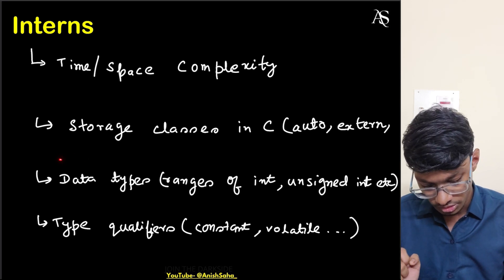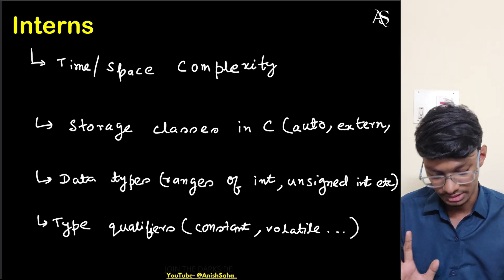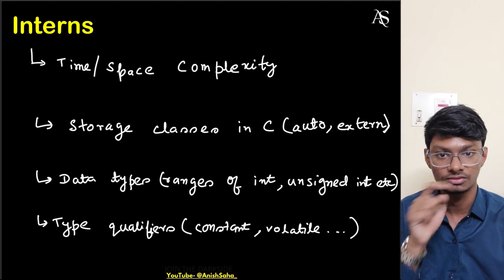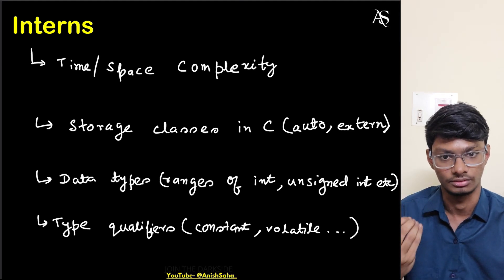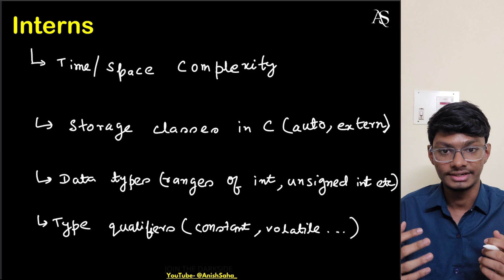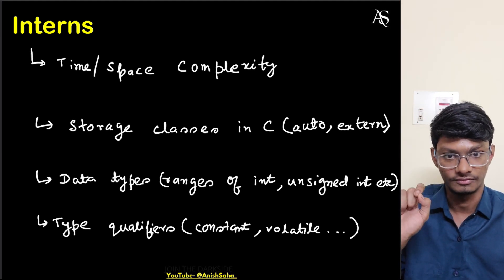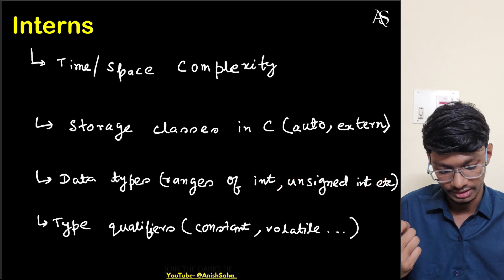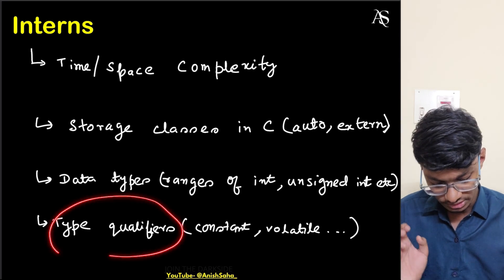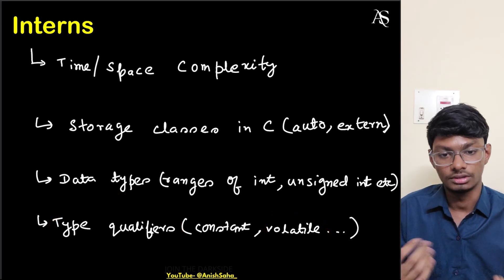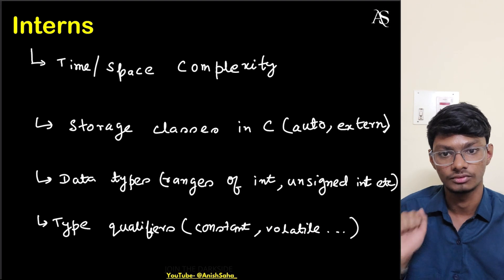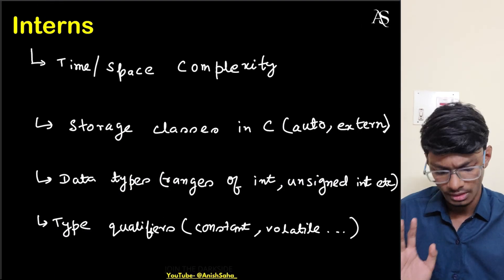For DSA, understand time and space complexity — if you make code more time-efficient, does space complexity increase? Know storage classes in C: auto, extern, and others. Data types are important too — understand the range of int, unsigned int, signed int, float. Also know type qualifiers: const and volatile, and what a volatile variable means. Macros also need a basic understanding.